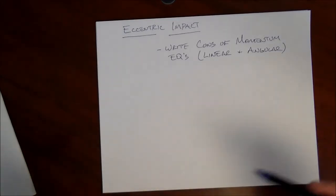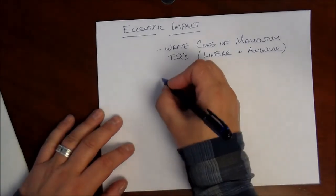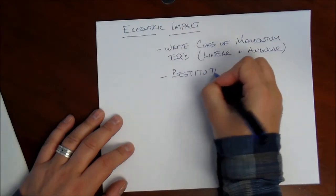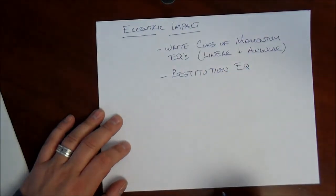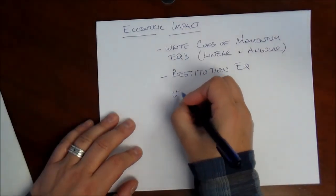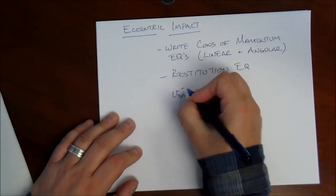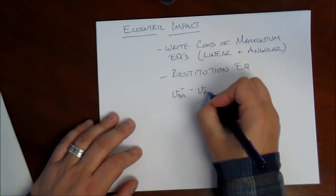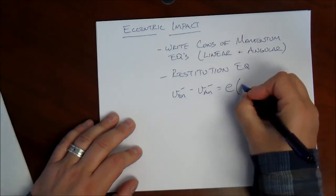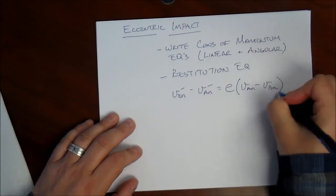We try to find a place where we have conservation of angular momentum. And then we also have the restitution equation. Now it's important to recognize that the restitution equation, it looks just the same as we saw before, and it applies in the normal direction relative to the impact.